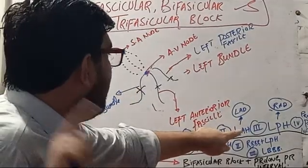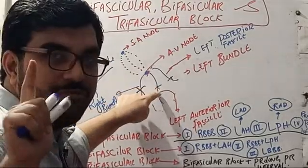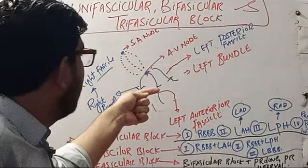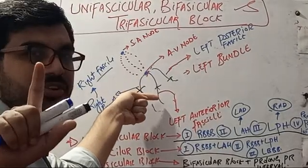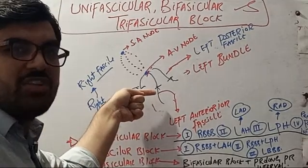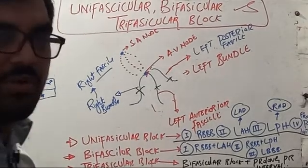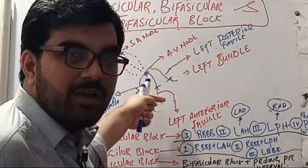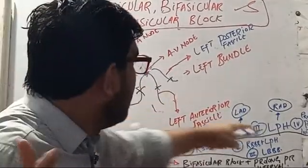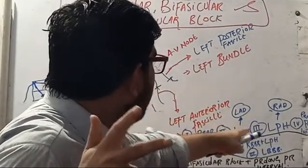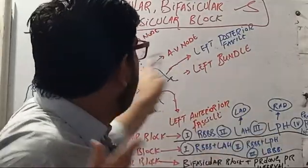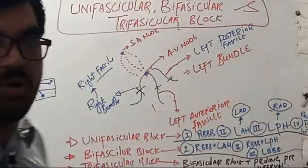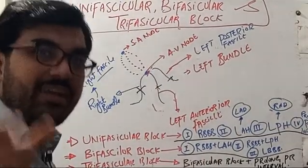Right bundle branch block is unifascicular block. Or left anterior hemiblock — if this fascicle is blocked, that is unifascicular block. If the left anterior fascicle is blocked, it causes left axis deviation. So in ECG, if you are having right bundle branch block only, that is unifascicular block. If in ECG you are having only left axis deviation, you have left anterior fascicle block. If in ECG you are having only right axis deviation, this is left posterior hemiblock.